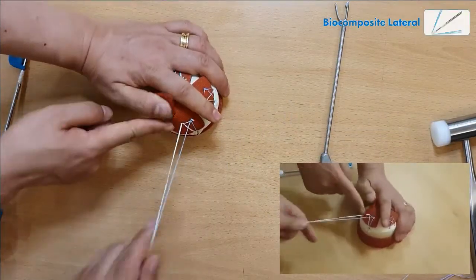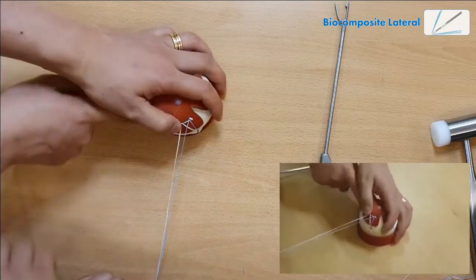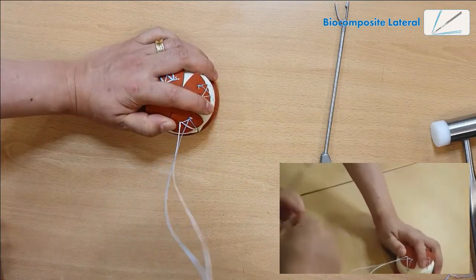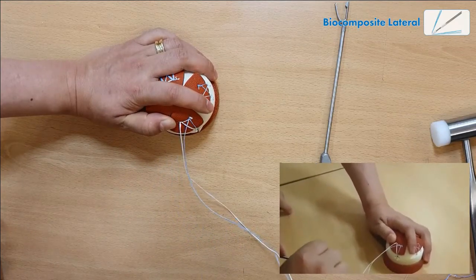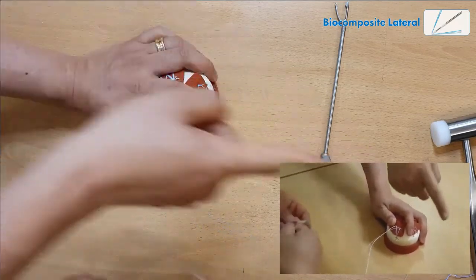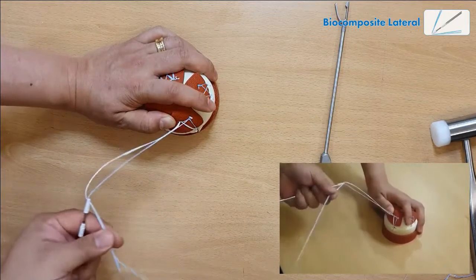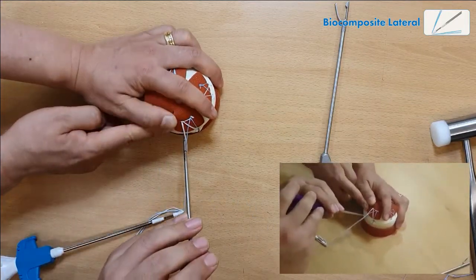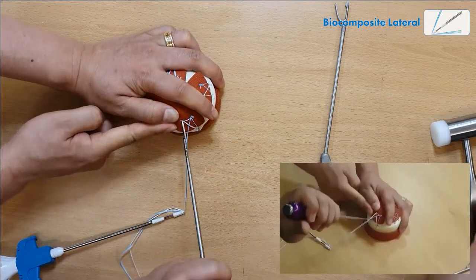And the second one, I'm going to use the biocomposite medial anchor. Now this one, you need tapping. Just tap it to the second index mark.